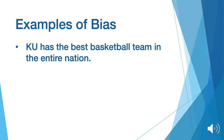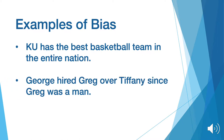Let's look at some examples of bias. KU has the best basketball team in the entire nation. This is bias because it is inferring that one team is better than the other at all times, and this is a personal preference or opinion. Another example would be how George hired Greg over Tiffany since Greg was a man. This is gender bias.